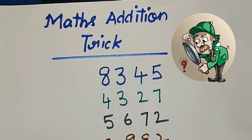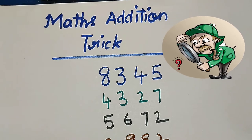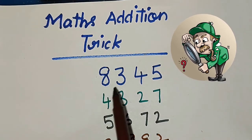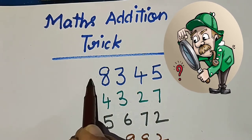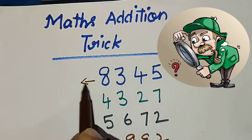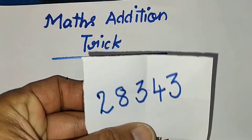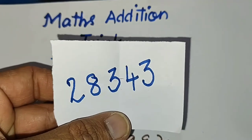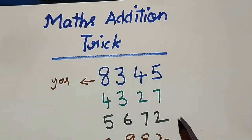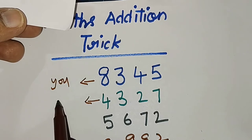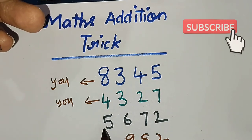It's reveal time! How did I guess the answer? First, I asked you to write a 4-digit number. You wrote 8345. Immediately I took a paper and wrote a secret number. Let me reveal the solution now. I asked you again to write another number, and you wrote 4327.